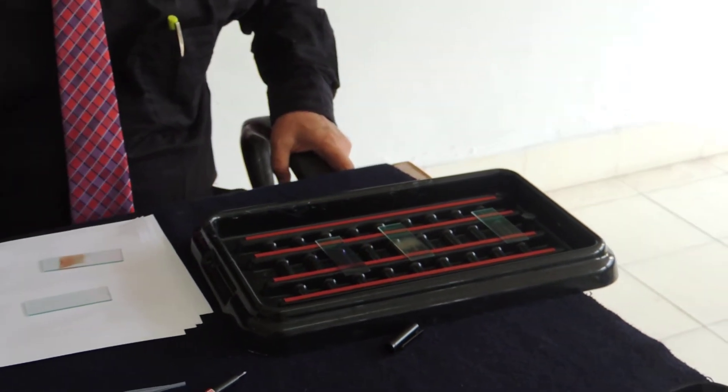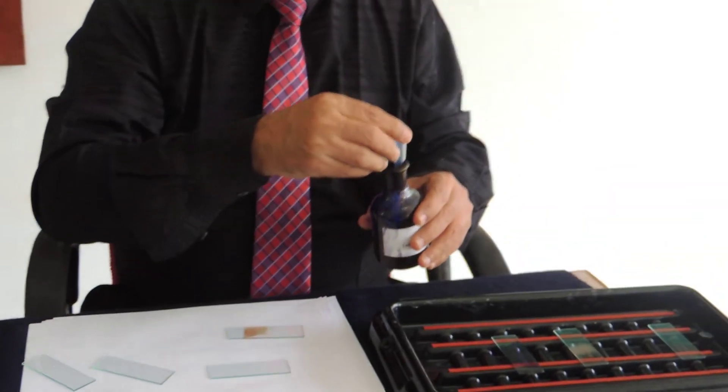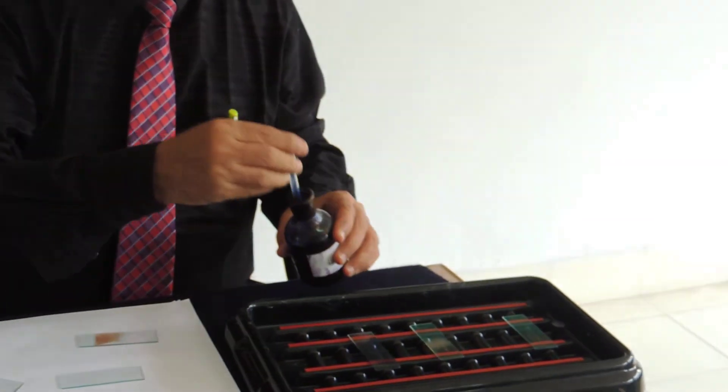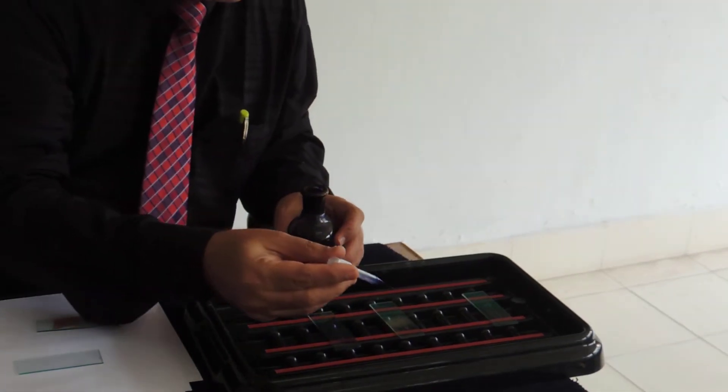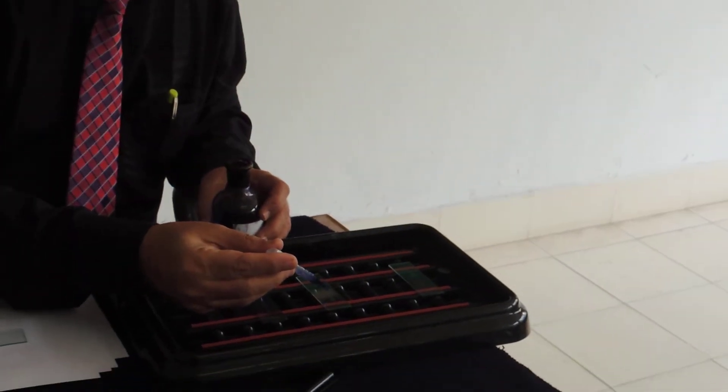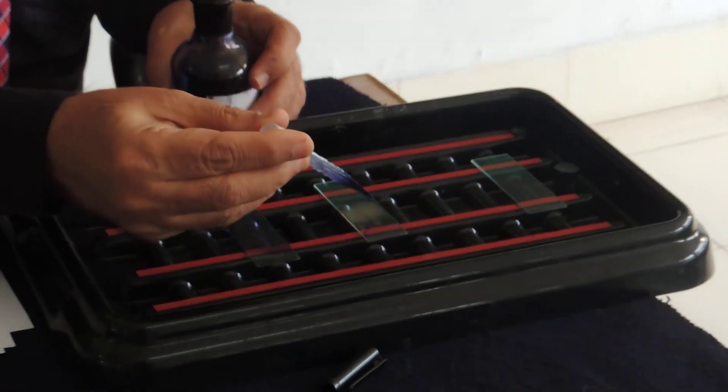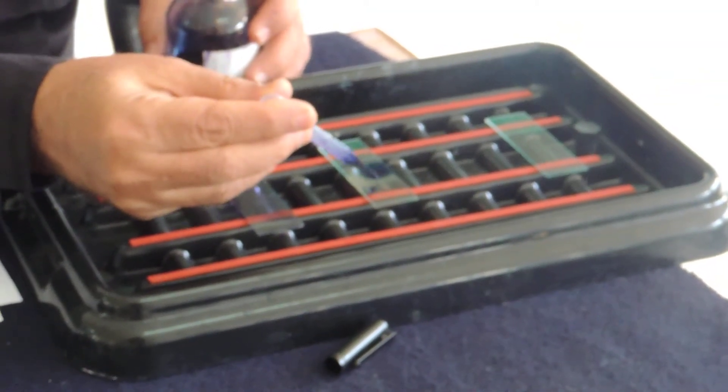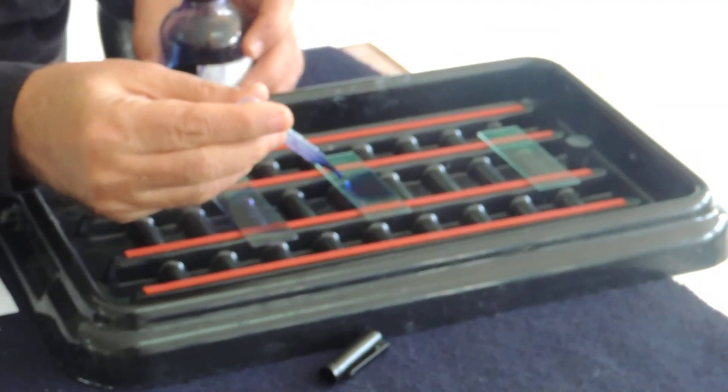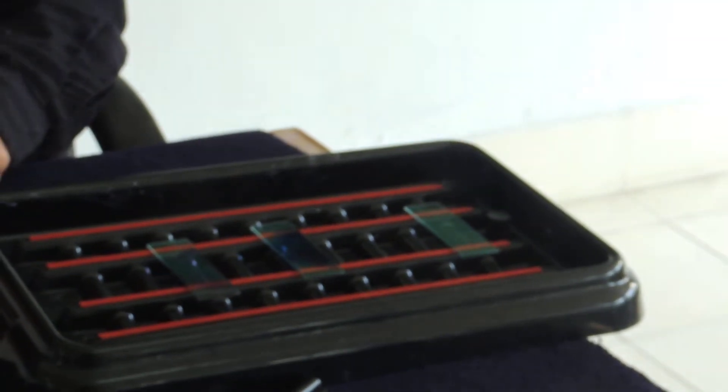And then you take the Leishman stain which is already there and put the drops of the stain to cover your smear. And count the drops. Now I am putting the drops. One, two, three, four, five, six, seven. So seven drops, my smear has been covered with the stain entirely.